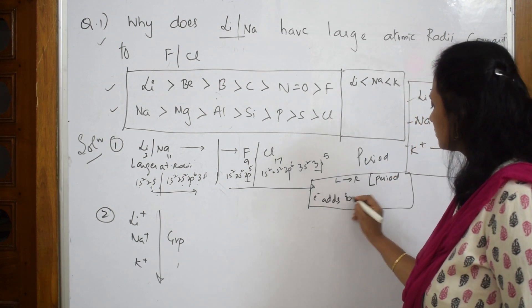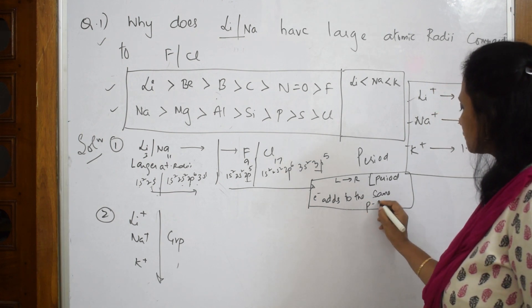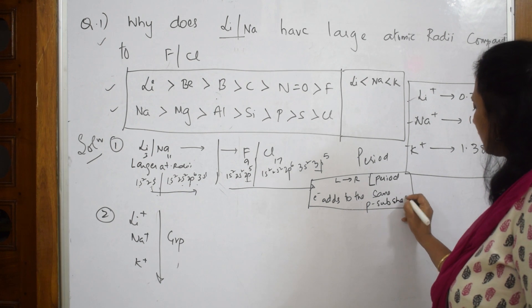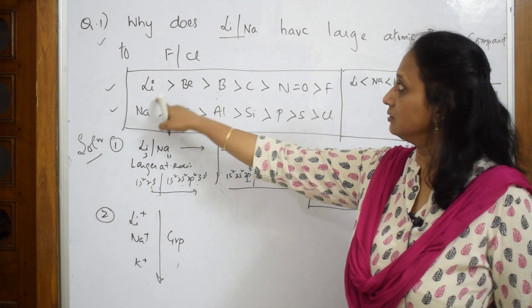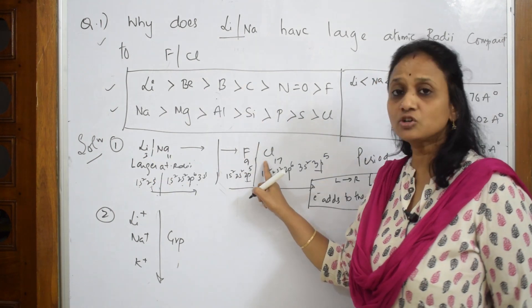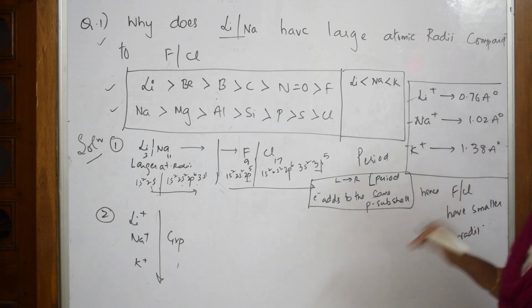Electron adds to the same p subshell. Hence lithium and sodium have larger size, fluorine and chlorine have smaller size. Hence fluorine and chlorine have smaller radii. This is the exact perfect answer to that particular question. Now I need to answer this for the group trend.